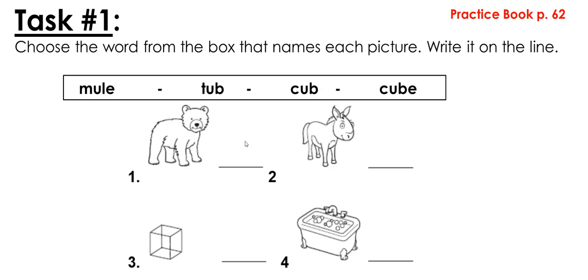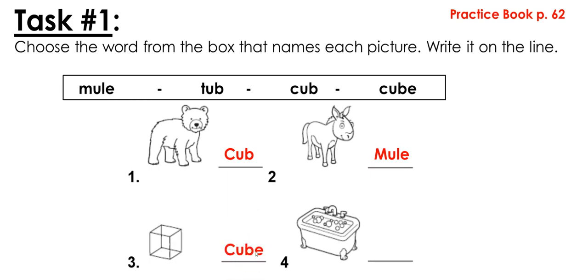You can find this exercise in practice book page 62 — go grab it. If you haven't done this exercise, do it now. If you did it, just make sure your answers are correct. Look at the first picture: it is a cup. Number two: this is a mule. Number three: it's a cube with a long U. And this is a tub. There is no magic E on the short U — 'cup' — but when we have a silent E, the U becomes long: mule, cube.